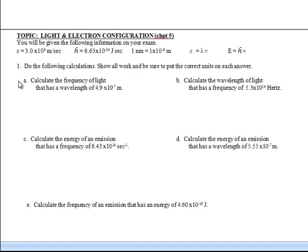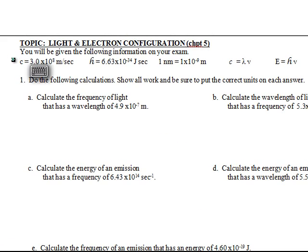The next topic is light and electron configuration. Before we get into the electrons jumping around, let's talk about light. The first thing you need to know is that we're going to give you all of this stuff - the speed of light, Planck's constant, the nanometer-meter conversion, and the formulas for speed of light and energy. You just have to know what to do with all this stuff.